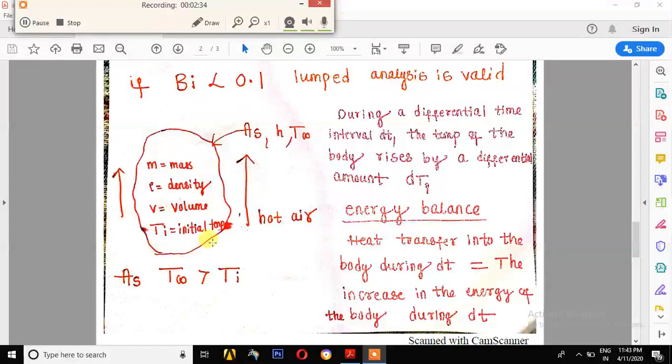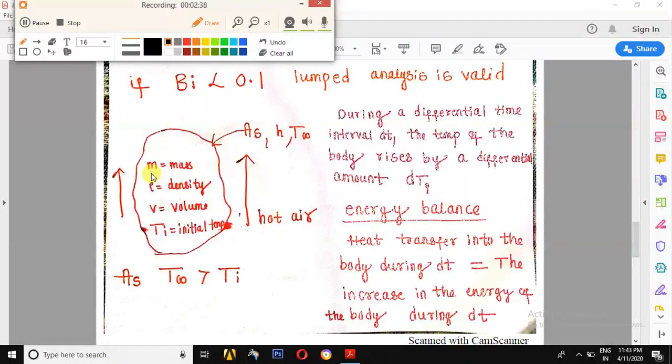Consider a body of arbitrary shape having mass m, density rho, volume v, and maintained at uniform temperature Ti. This body is exposed to atmospheric air having temperature T infinity, heat transfer coefficient h, and the body has surface area As.